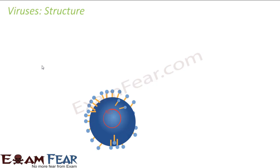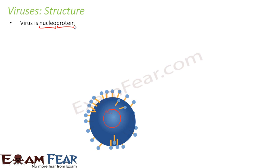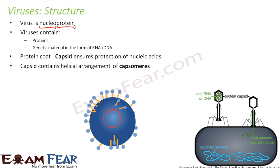Now let us talk about the structure of virus. They do not consist of a cell, but they do have genetic material. A virus is a nucleoprotein. When we talk about genetic material — ribonucleic acid or deoxyribonucleic acid — if you look at their chemical composition, they are all proteins. So a virus is nothing but nucleoproteins: they contain proteins and genetic material in the form of RNA or DNA.